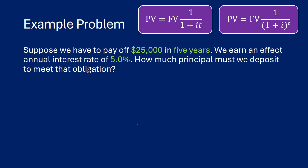We're going to do some sample problems. Suppose we have to pay off $25,000 in five years and we earn an effective annual interest rate of 5%. How much principal must we deposit to meet that obligation under simple interest and compound interest? Our future value is $25,000, time is five years, and i equals 0.05. We need to find our present value.